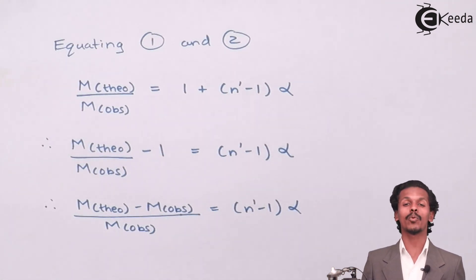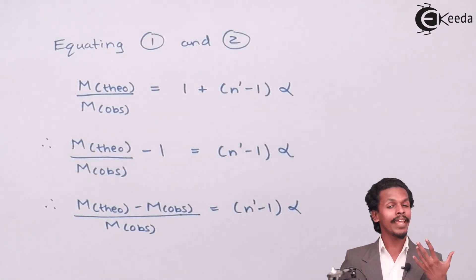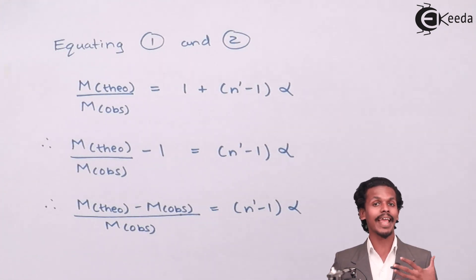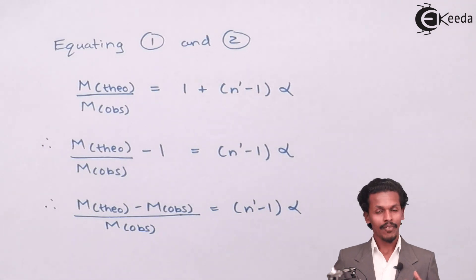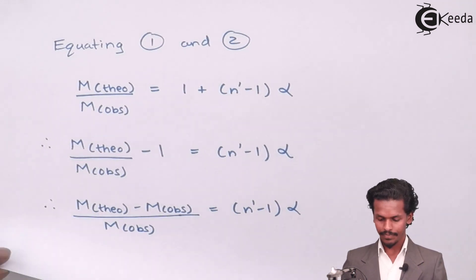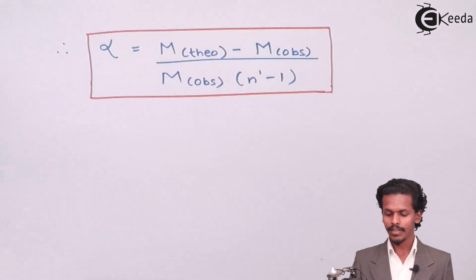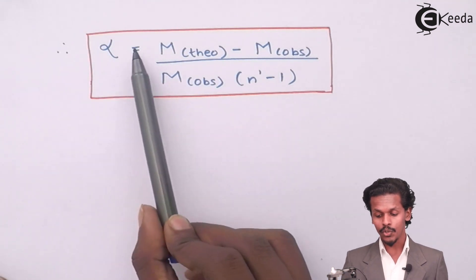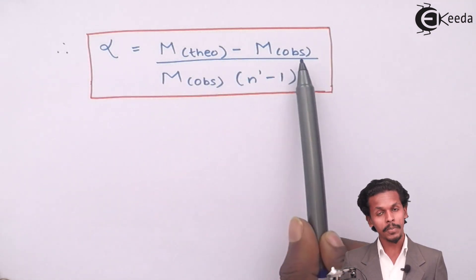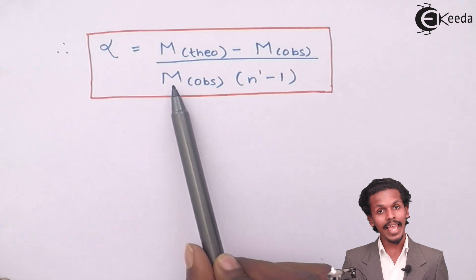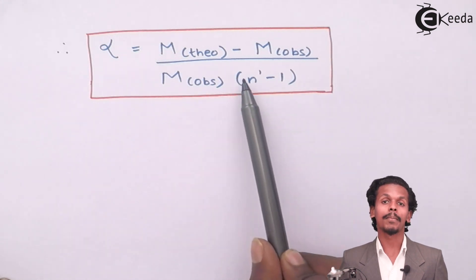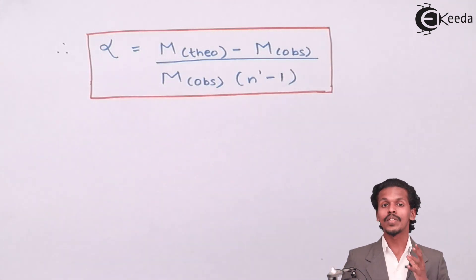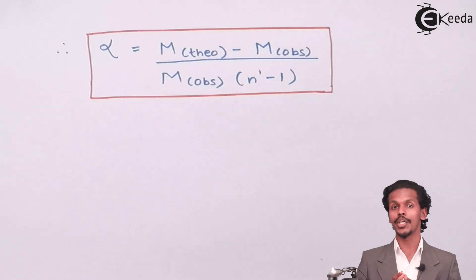And ultimately by equating this all to make a relation between the degree of dissociation and molar mass of solute for an electrolyte, we will get an equation. And we have proved that alpha equals M theoretical minus M observed divided by M observed times n bar minus 1. So this is how we have proved this equation.